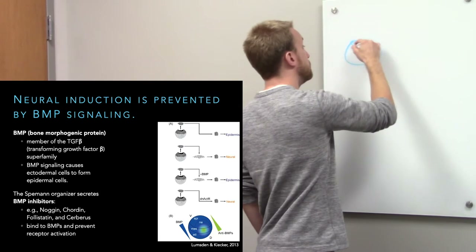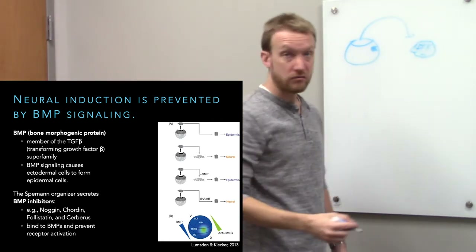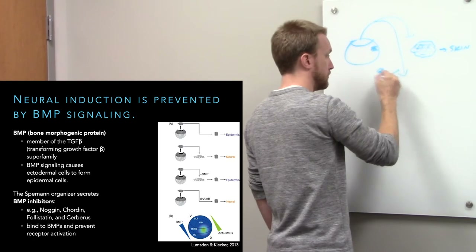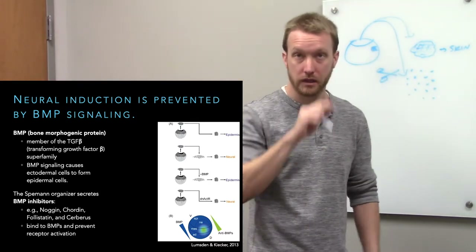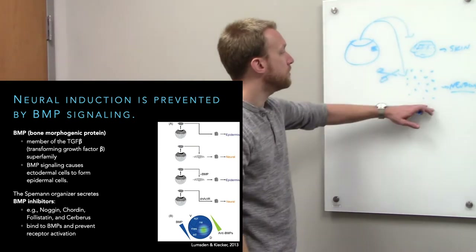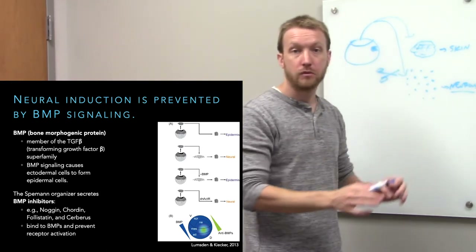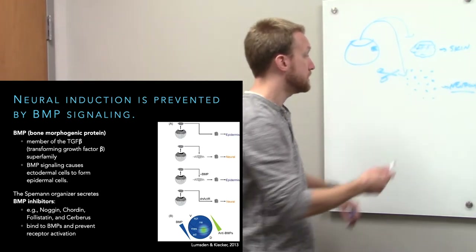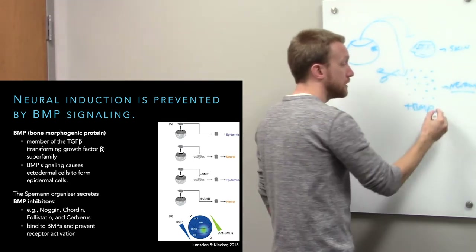If you take those cells and grow them together as a flap, you get a piece of skin. But if you dissociate them into single cells and spread them out — so they're not exposed to the BMP their neighbors are secreting — you get a whole bunch of neurons. So the default pathway is neuron; when near neighbors we're told to become skin. To get neural induction, we need to remove BMP signaling. Bathing the dissociated cells in BMP again gives skin.